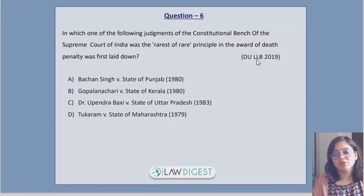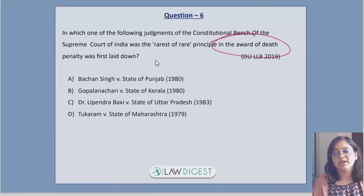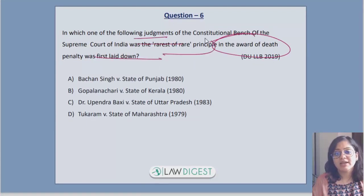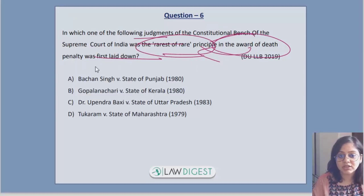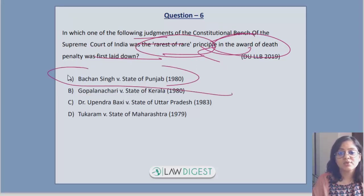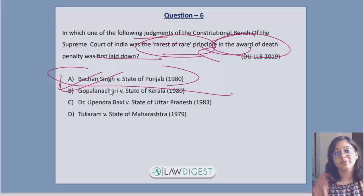Question 6: the 'rarest of the rare' principle that applies in death penalty cases — in which judgment did it come? Rarest of the rare means death penalty is given only in the rarest of rare cases. The correct answer is Bachchan Singh versus State of Punjab.